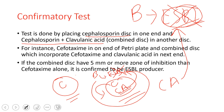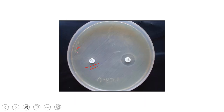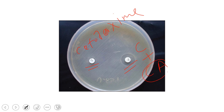With the ESBL enzyme inhibited by clavulanic acid, the cephotaxime will play its role and kill the bacteria, producing a zone of inhibition. But in the disc with only cephotaxime alone, the bacteria produce the ESBL enzyme which breaks the beta-lactam ring, so the antibiotic no longer works. For example, in the next figure you can see the cephotaxime ring is broken down, whereas with clavulanic acid the ESBL activity is inhibited.